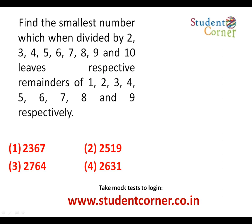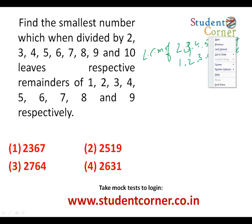Similarly, an LCM-type concept: find the smallest number which when divided by 2, 3, 4, 5, 6, 7, 8, 9, and 10 leaves respective remainders of 1, 2, 3, 4, 5, 6, 7, 8. That means when dividing by 2 the remainder is 1, by 3 the remainder is 2, by 4 the remainder is 3, by 5 the remainder is 4, and so on until dividing by 9 leaves remainder 8.